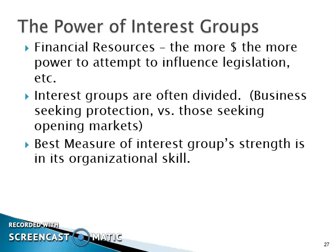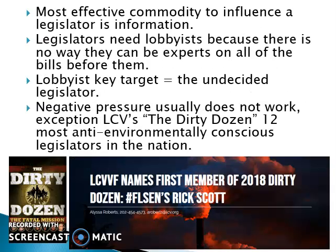The example of the NRA illustrates organizational skill — monitoring legislation from all 50 states, the national government, and major city legislatures and city councils for any legislation that would affect the right to own a gun. If you do not have the organizational skill to monitor all of this, you can never as an interest group have the strength needed to make any lasting impact or protect the rights of those you serve.